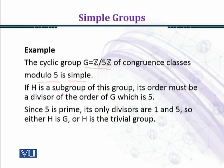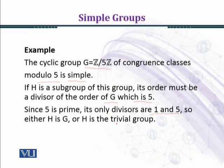If H is a subgroup of this group, its order must be a divisor of the order of G, which is 5. Since 5 is prime, its only divisors are 1 and 5. So either H is G, or H is the trivial subgroup, that is H equals the singleton {e}. This means that Z5 is a simple group — it has only the trivial normal subgroup, and there is no other option.